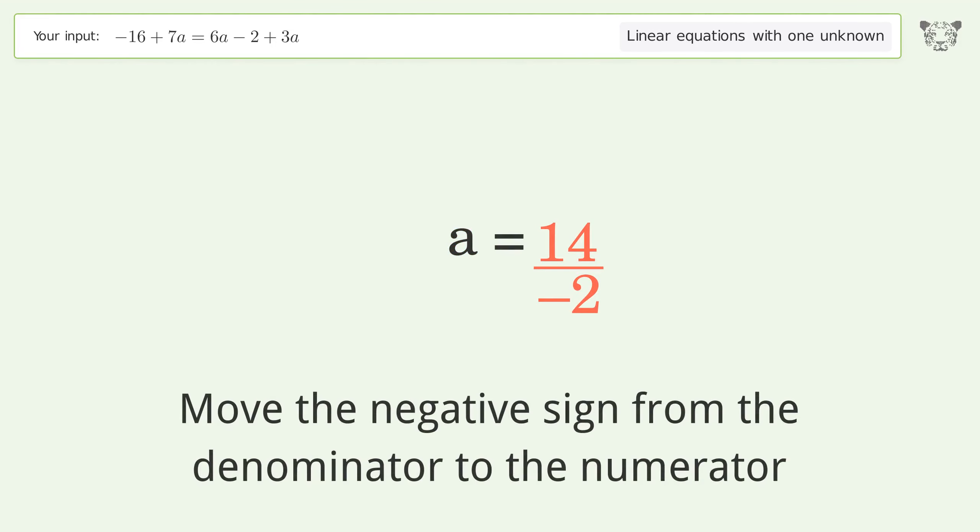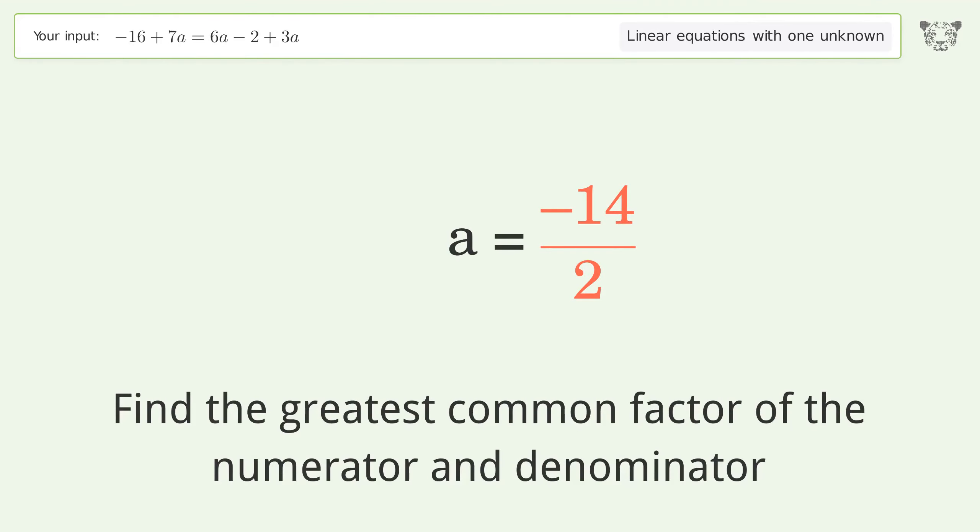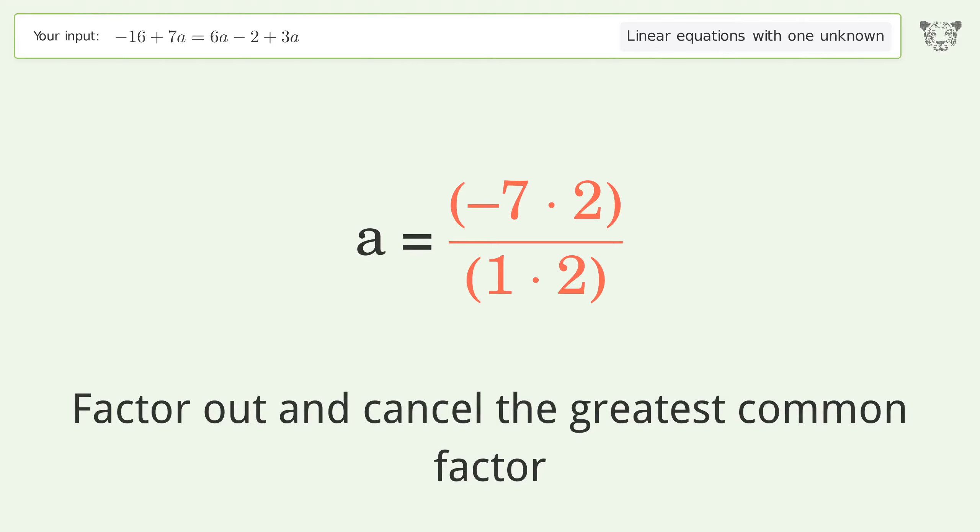Move the negative sign from the denominator to the numerator. Find the greatest common factor of the numerator and denominator. Factor out and cancel the greatest common factor.